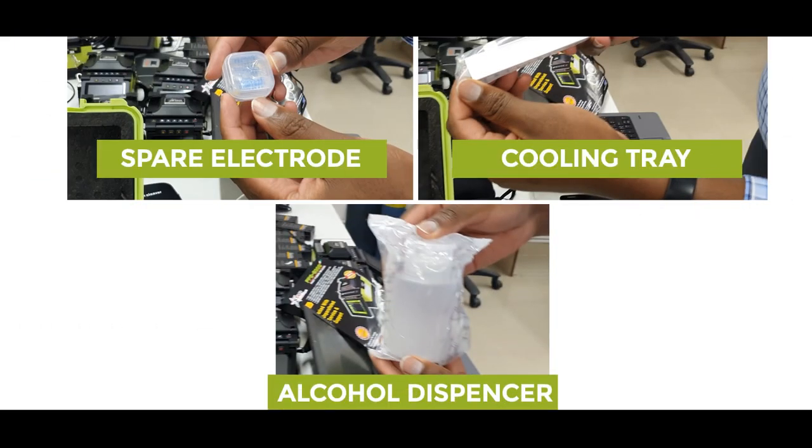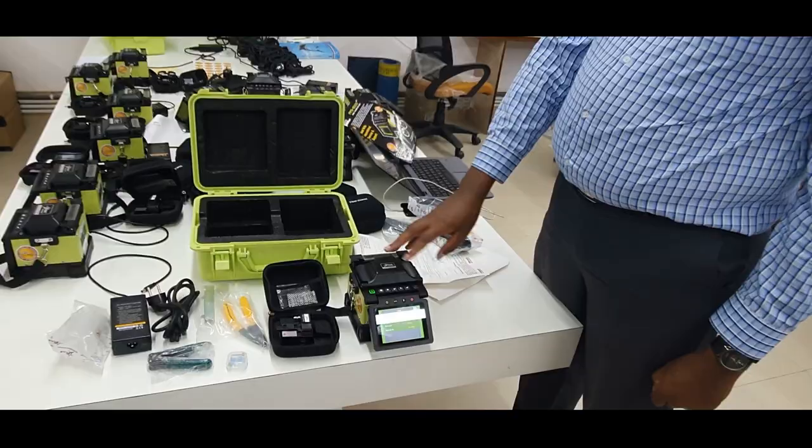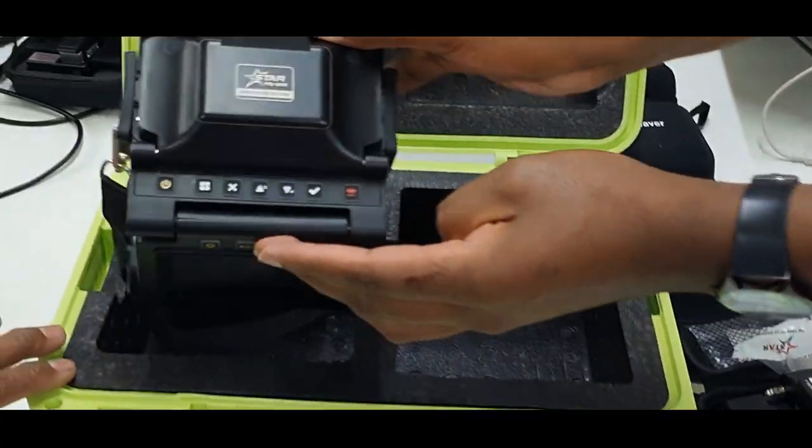These are the spare electrodes, we have a cooling tray, and we have an alcohol dispenser. This is the total standard package that we supply.